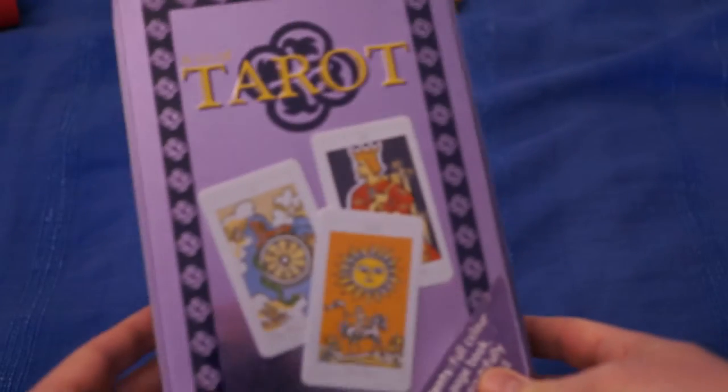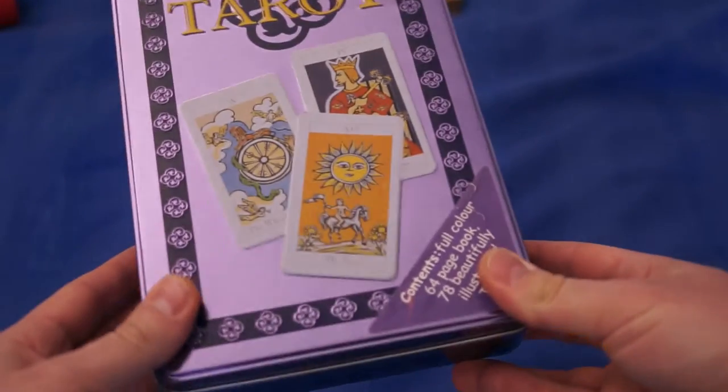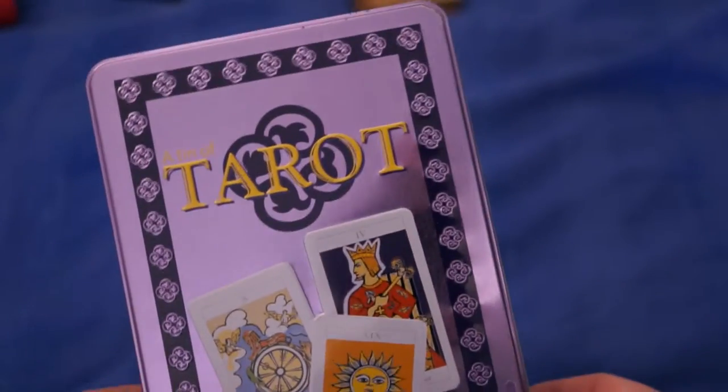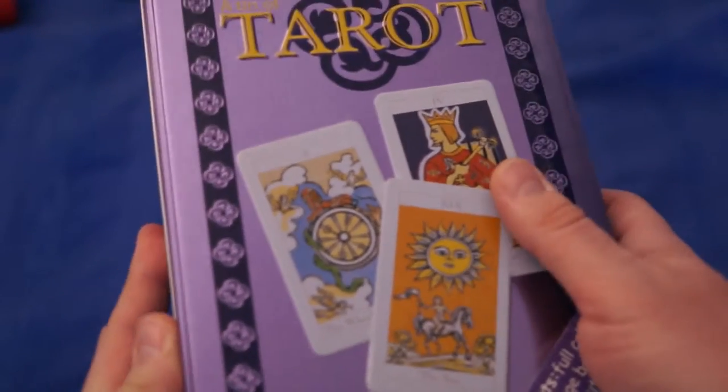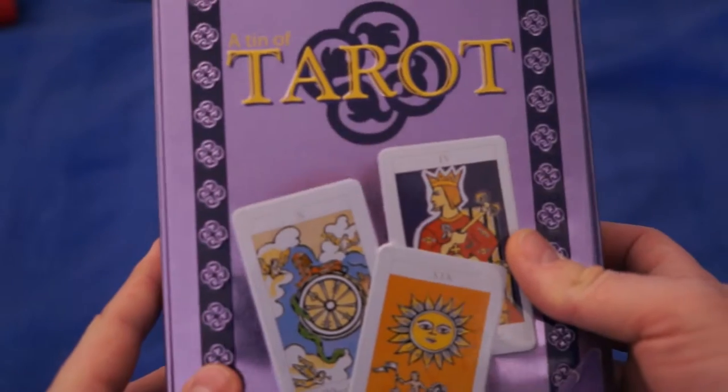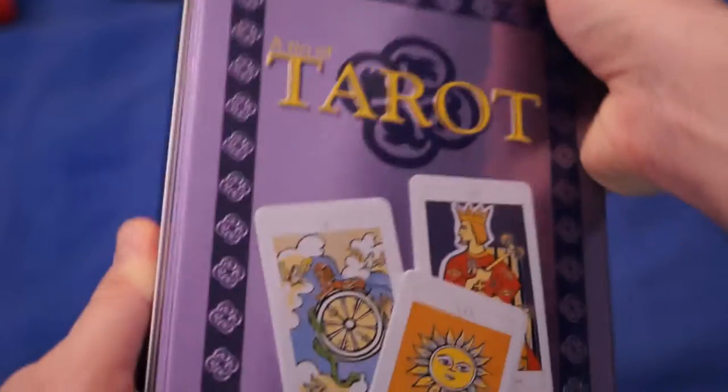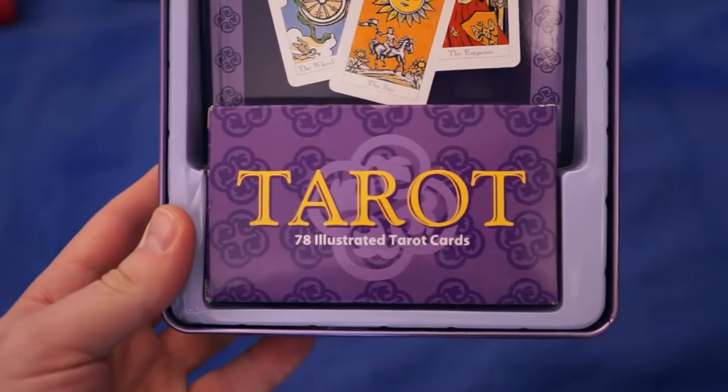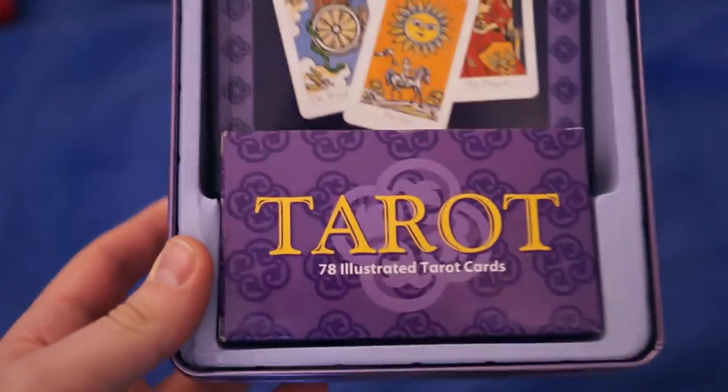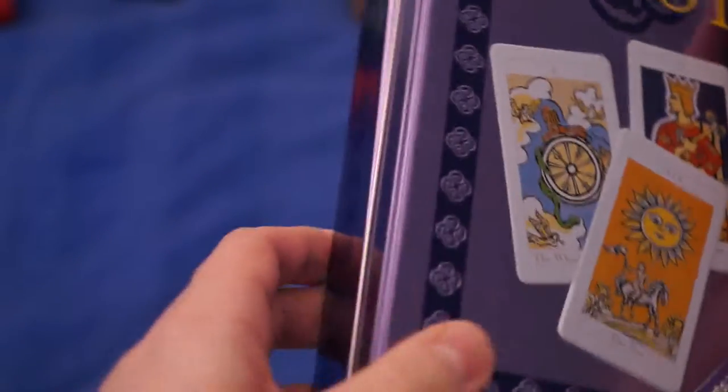Next up is a set of tarot cards. This new age occultist stuff, it's called Tin of Tarot. It was complete, I checked it. It has the book and the deck of cards, 78 cards. I should be able to get about 200 crowns, 25 bucks something like that.